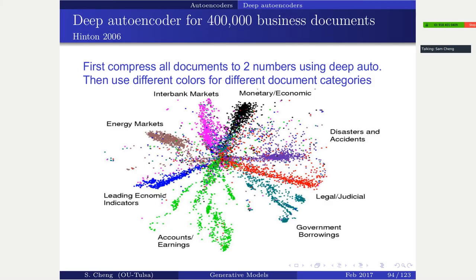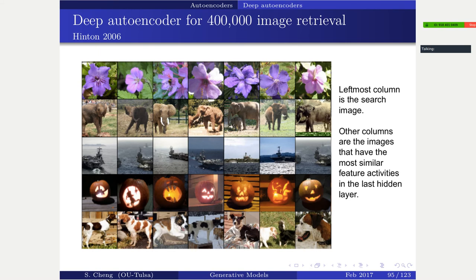Autoencoders can also be used for data visualization - similar to t-SNE. You downsample data with the bottleneck code and plot the first two components. For document data, different document types cluster well. For image retrieval, you use the middle layer as features, comparing Euclidean distance or dot products between feature vectors to decide image similarity.